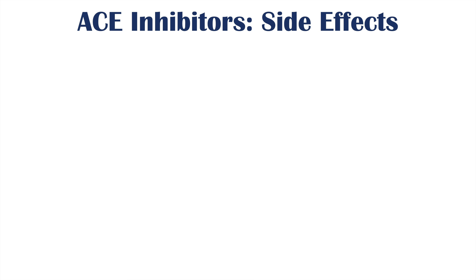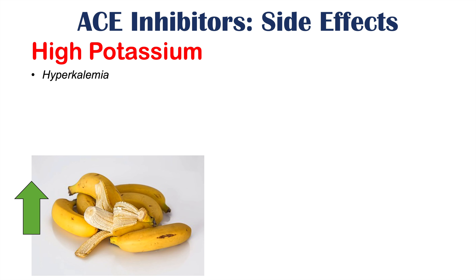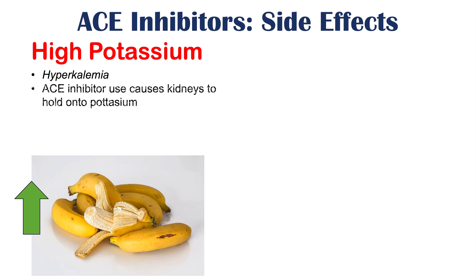Another side effect of ACE inhibitor use is high potassium levels, known as hyperkalemia. This occurs because ACE inhibitor use causes the kidneys to retain potassium, leading to elevated potassium levels in the blood.